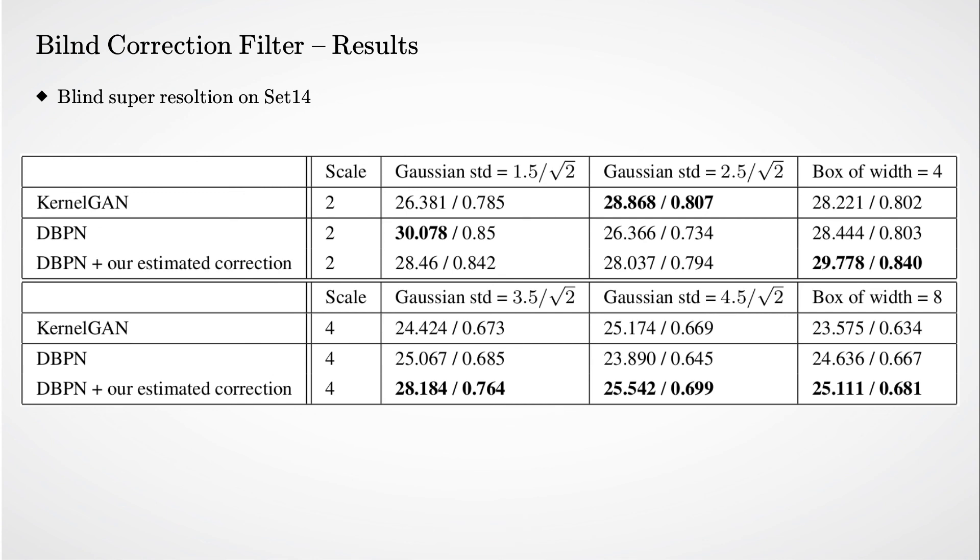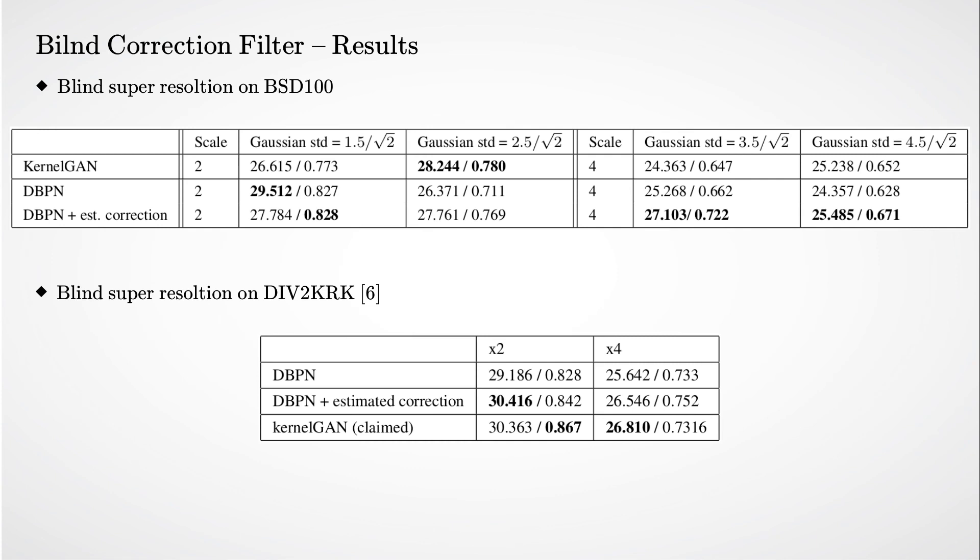Here we can see the results in numbers for Set14 for multiple downsampling kernels. The same holds for BSD100 and the recent DIV2K ARCA dataset.